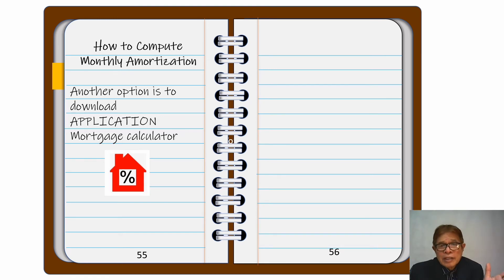You can search in Google again, Mortgage Calculator. And it will give you options. When you download this, you can just input the loan amount, the interest, and the terms of payment. Automatically, it will provide you with a monthly amortization. Just disregard the dollar sign. It doesn't matter. That's how to compute your monthly amortization.